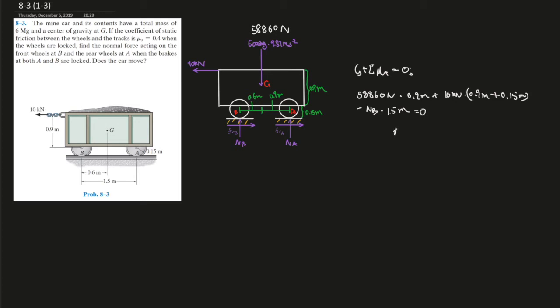If you plug everything into your calculator, the normal force at B should give you 42,316 newtons, right? This is minus,